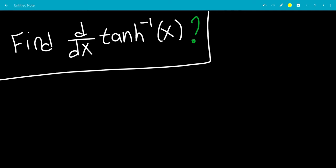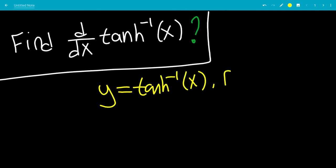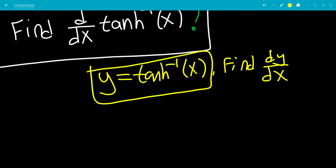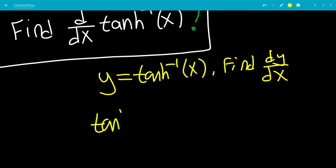We're going to define the function y equals tanh inverse of x, and the goal is to find dy over dx. We can take tanh on both sides of this function, leaving us with tanh of y equals tanh of tanh inverse, which is x.